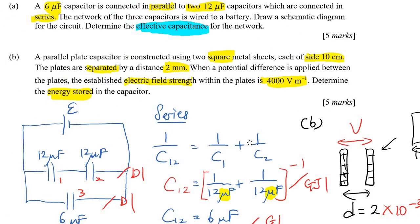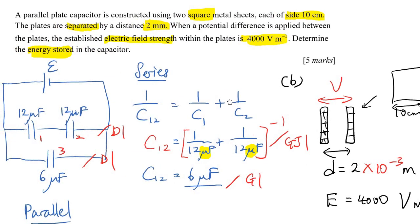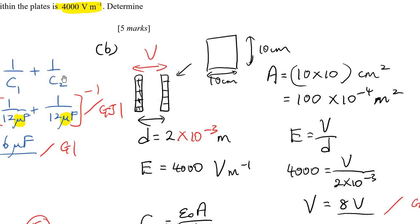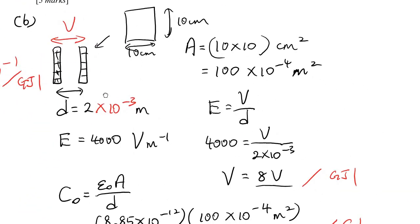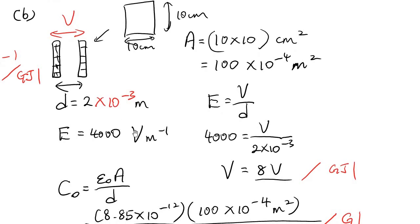And then determine the energy stored in the capacitor. So energy stored is U. Want to find U. So first of all, how to do. This is the information we have. So we can find the voltage, potential difference. V over D. E equal to V over D. So just put in E and D. We can get the voltage 8 volt. 8 volt between the two plates.